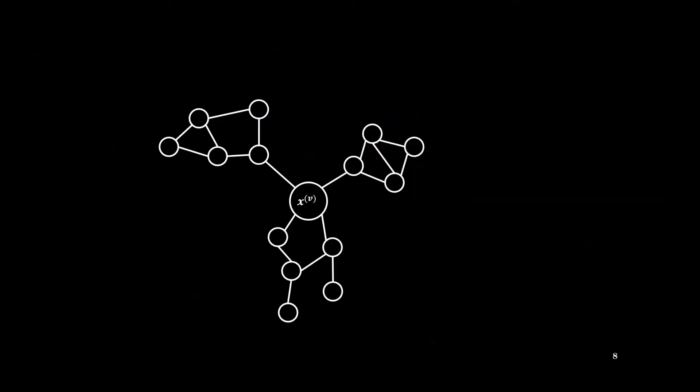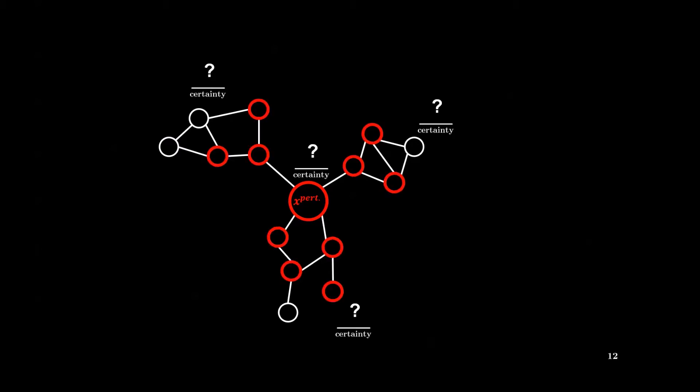To illustrate this, consider a graph in which a few nodes are perturbed, for example by simply forgetting to normalize their features. Without the graph structure, those data points could be clearly indicated as out of distribution. However, with current approaches, the perturbation spreads with each message-passing step. Current approaches apparently allow a few perturbed nodes to influence the uncertainty estimates of a large fraction of the nodes in the graph, potentially rendering their predictions useless.